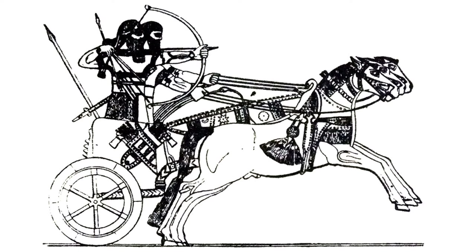The Hyksos had compound bows — thin strips of wood or bone glued together in a laminated manner — making the bow approximately three times stronger than a normal bow. They also had horse and chariots, which required significant training; the horse had to be trained to be comfortable in that situation. There were two men in the chariot: one would steer the horse and the other would use the weapon, usually a bow or a spear. The chariot had bronze armor on the front, the men had bronze armor, and they were going against Egyptians with wooden armor on foot.